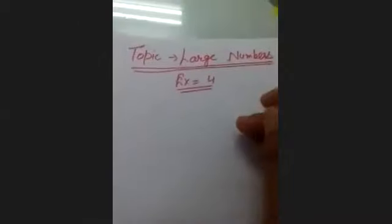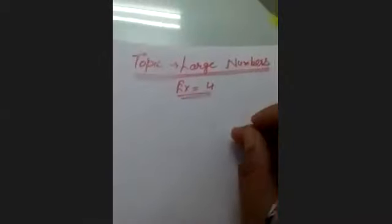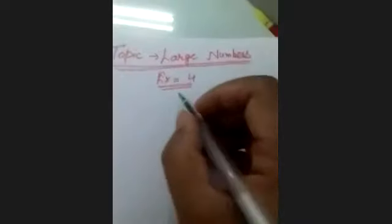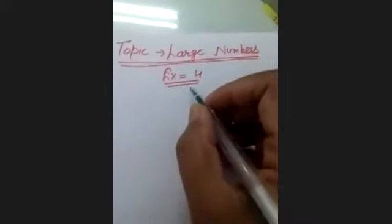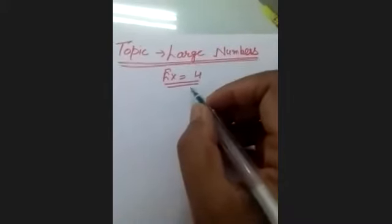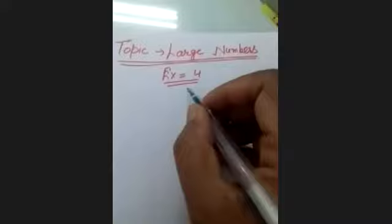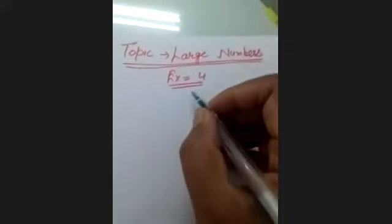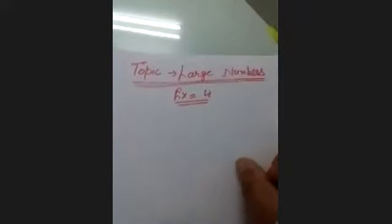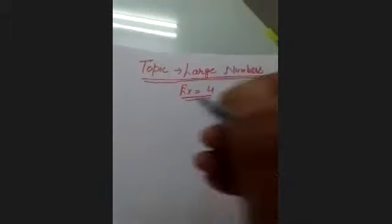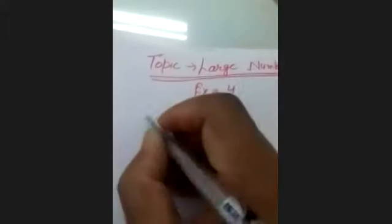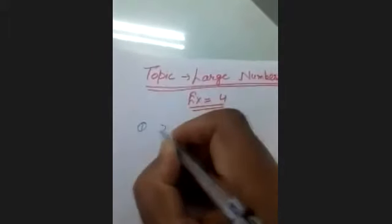Good morning students. Our topic is large numbers and we are doing exercise four. In the first question, we compare large numbers and put the appropriate sign: greater than, less than, or equal to.